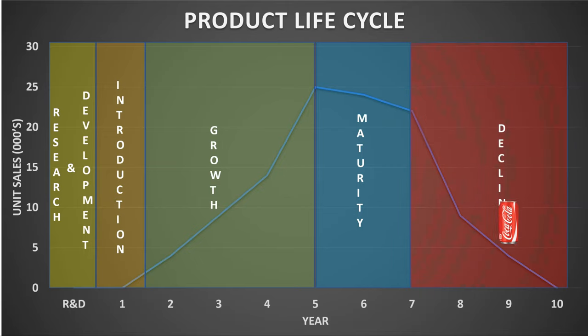Following the maturity of the product, it enters the decline stage, within which sales start to decrease and the market is oversaturated with both competition and availability of products. This leads to supply being higher than demand, which is commonly influenced by advancements in technology and changes in consumer buying behaviour. Therefore it is typical for a business to experience negative cash flow within this stage.